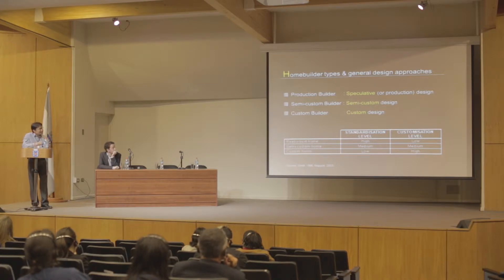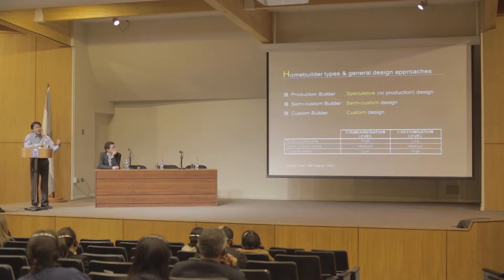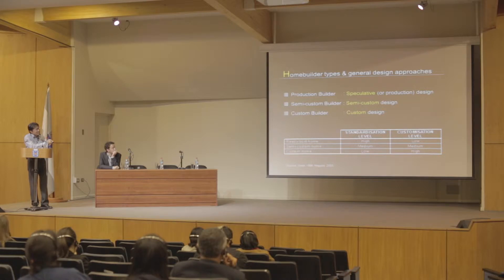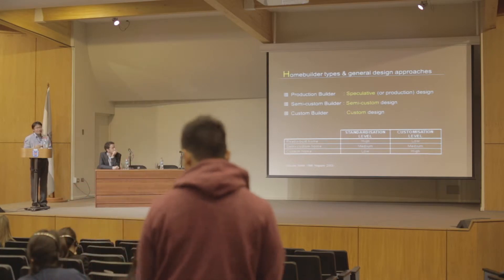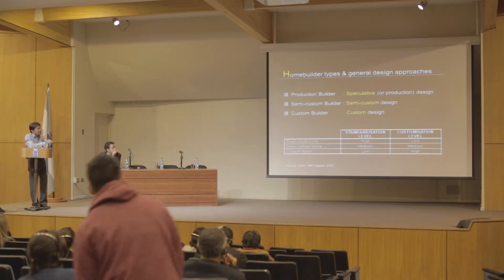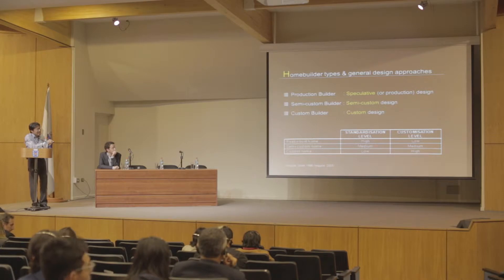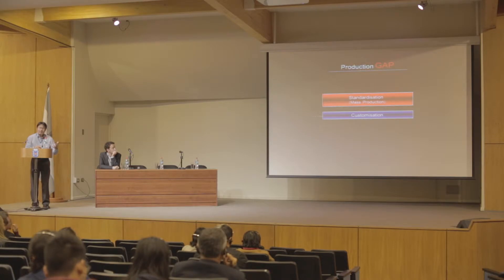Looking at already-built mass-produced houses, the standardization level is obviously high, meaning you can deliver mass-produced, cheaper, lower-cost housing — unlike custom homes, which are lowest in standardization. But speaking of design customizability, custom designs are the highest, unlike ready-built homes, which are the lowest. In other words, we have a production gap between the two.